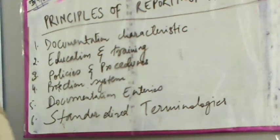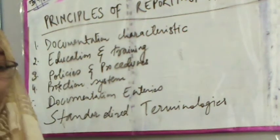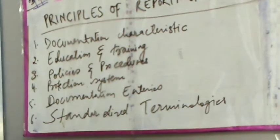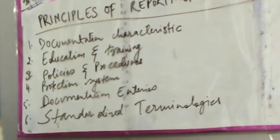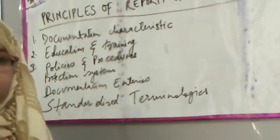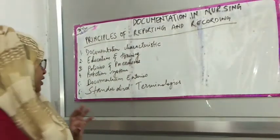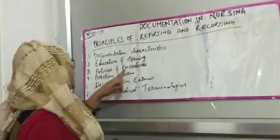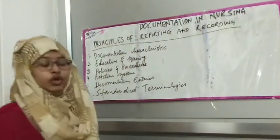Education and training covers what words you will use, what you will focus on in documentation — these are all things defined under education and training. Next is your policies and procedures.